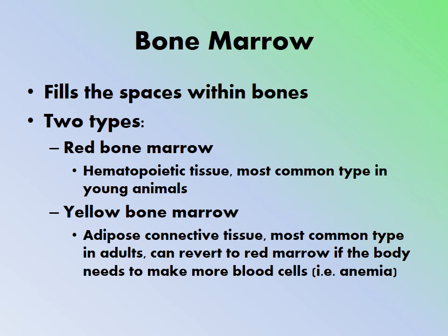However, if there is a large demand for hematopoiesis in an adult — for example, in an anemic patient — yellow bone marrow can revert back to red bone marrow and resume blood cell production to help address the anemia.